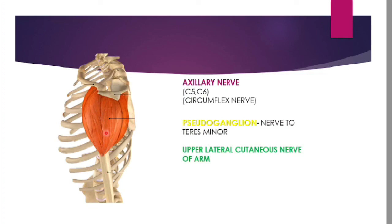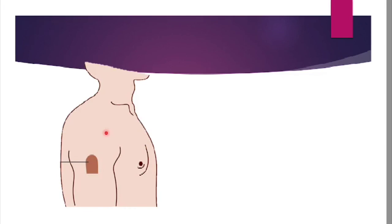One important peculiarity is that the axillary nerve obeys Hilton's law. Hilton's law states that a nerve which gives an articular branch to a joint also supplies the muscles which act on that joint and supplies the skin in the vicinity of that joint. The axillary nerve gives an articular branch to the shoulder joint, supplies the muscles acting on the joint (deltoid and teres minor), and supplies the skin in the vicinity of the joint — so the axillary nerve obeys Hilton's law.